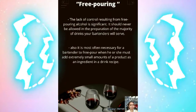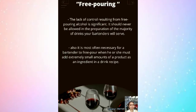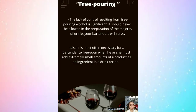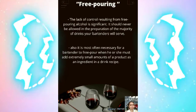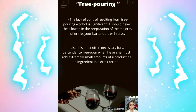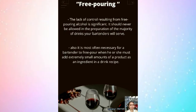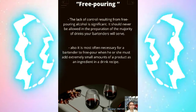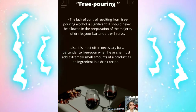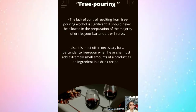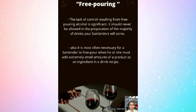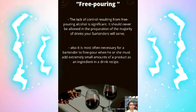Free pouring: the lack of control resulting from free pouring alcohol is significant, and it should never be allowed in the preparation of the majority of drinks your bartenders will serve. For example, in wine by-the-glass sales, the wine glass itself serves as a type of control device. Large operations may even utilize a dispensing system for wines by the glass. Free pouring is most often necessary when a bartender must add extremely small amounts of a product as an ingredient in a drink recipe — for example, when a bartender must add a very small amount of dry vermouth to a large martini.